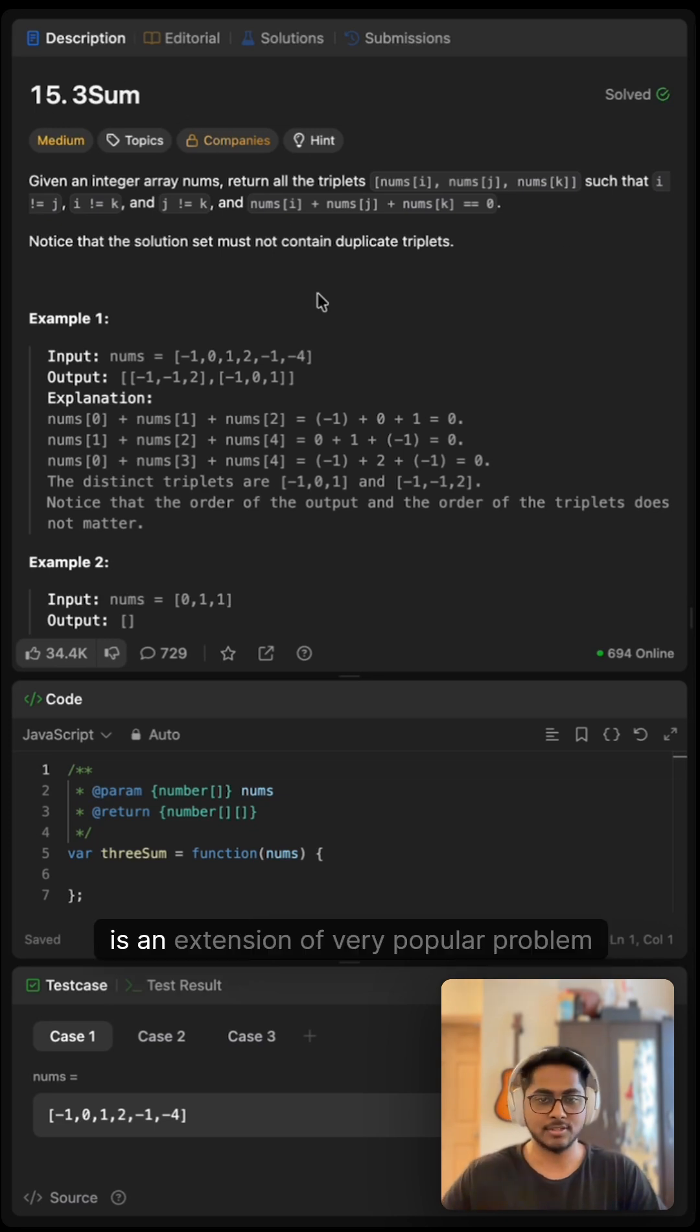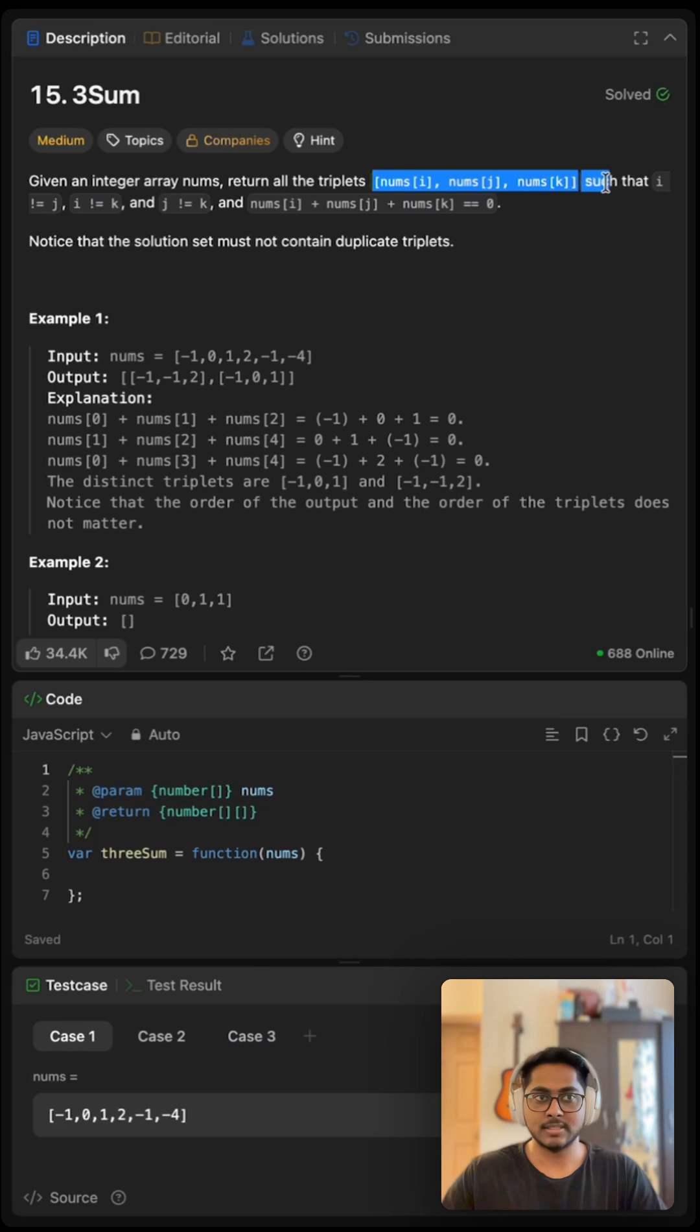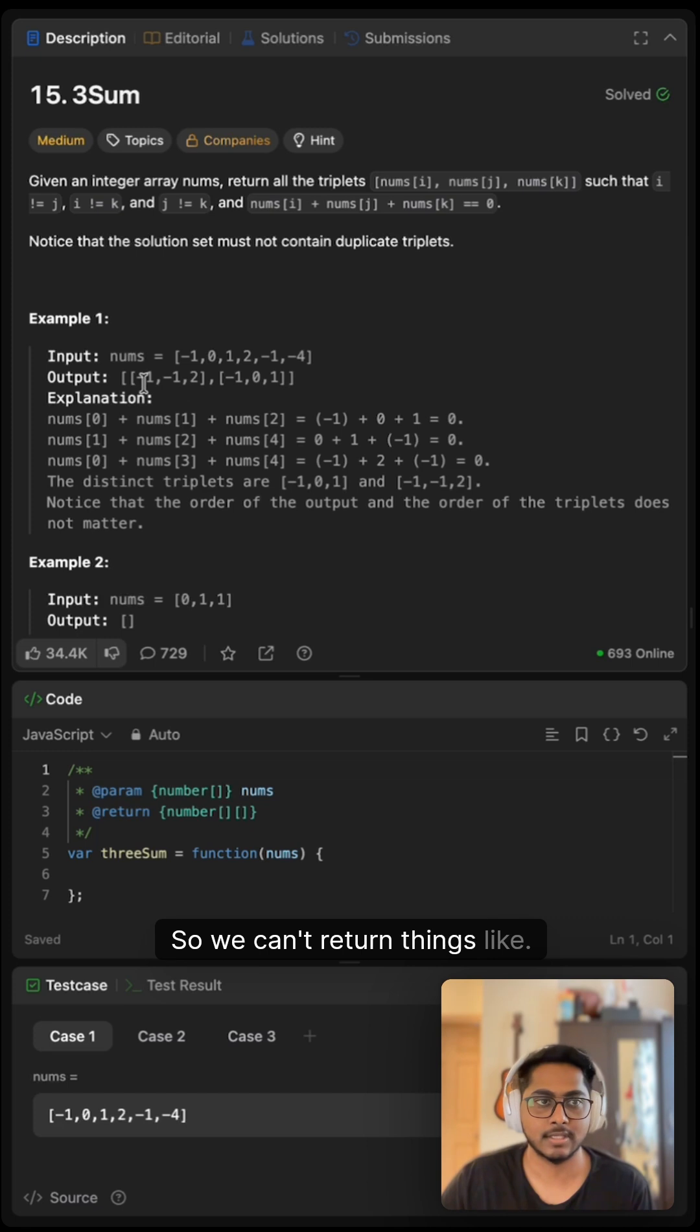This problem is an extension of the very popular problem called TwoSum. We are given an integer array nums and we have to return all the triplets that sum up to zero and none of the indices should be the same. It's also given that the solution set must not contain duplicate triplets. So we can't return things like minus 1, 2, and minus 1. That will count as duplicate triplets.